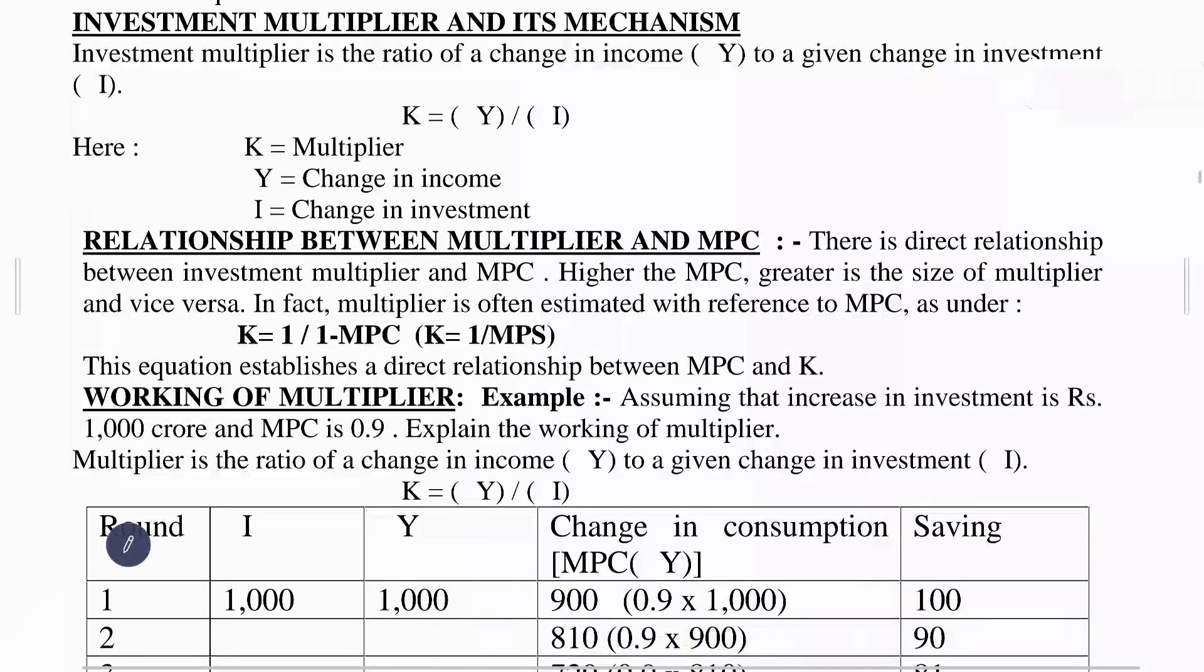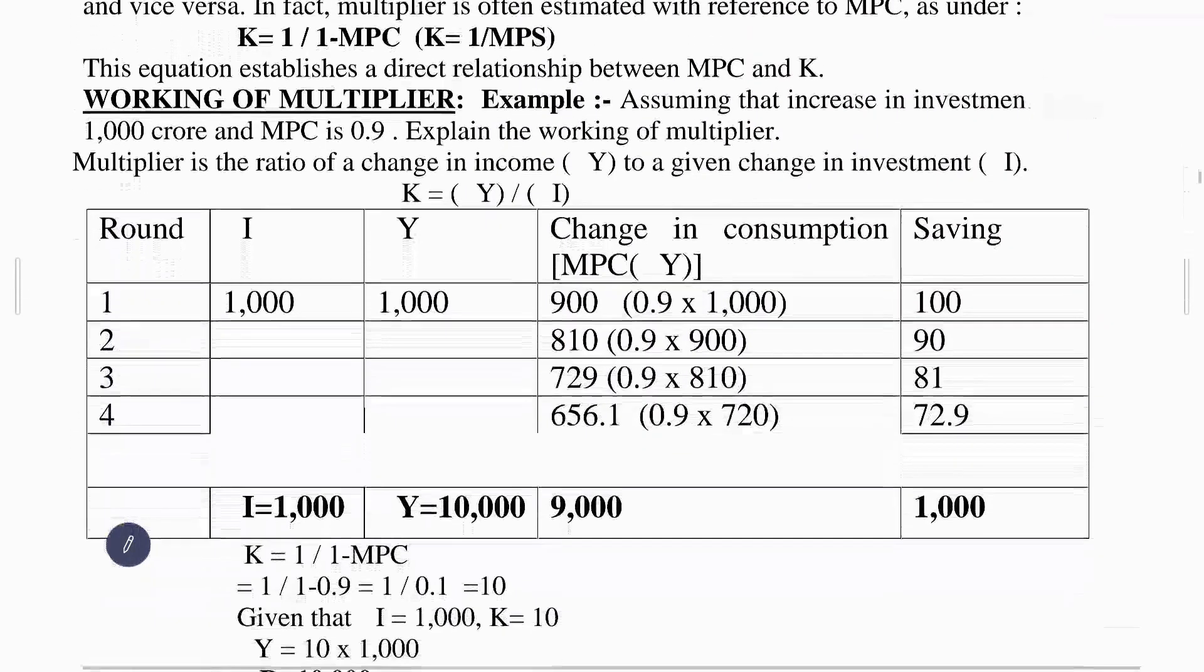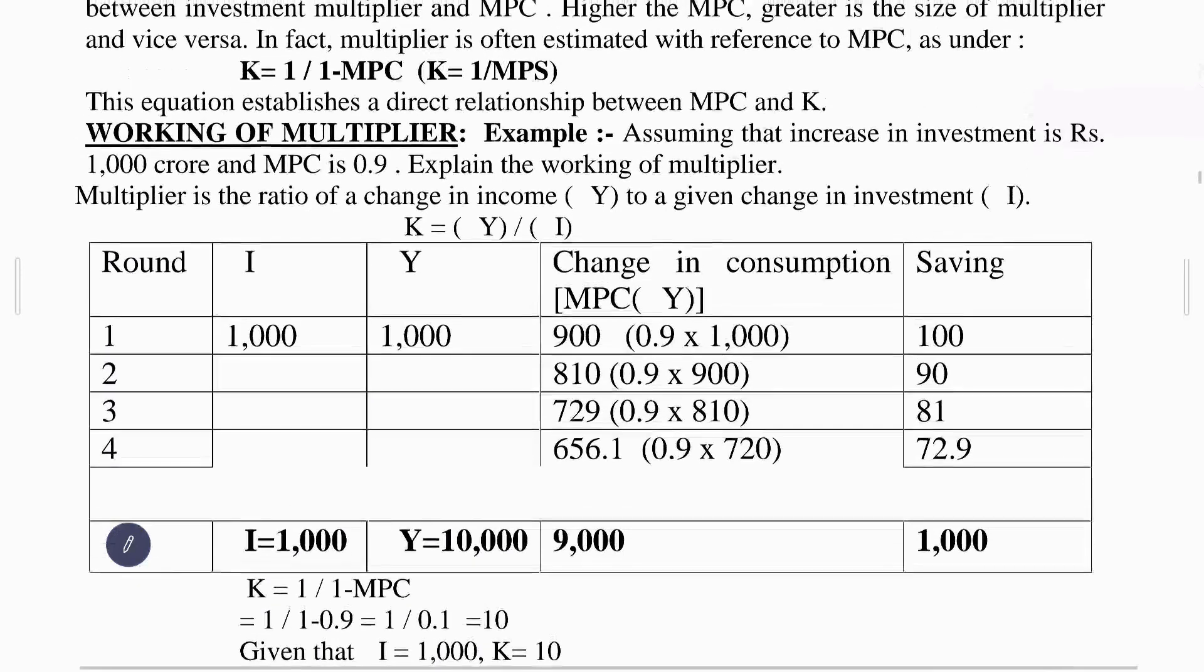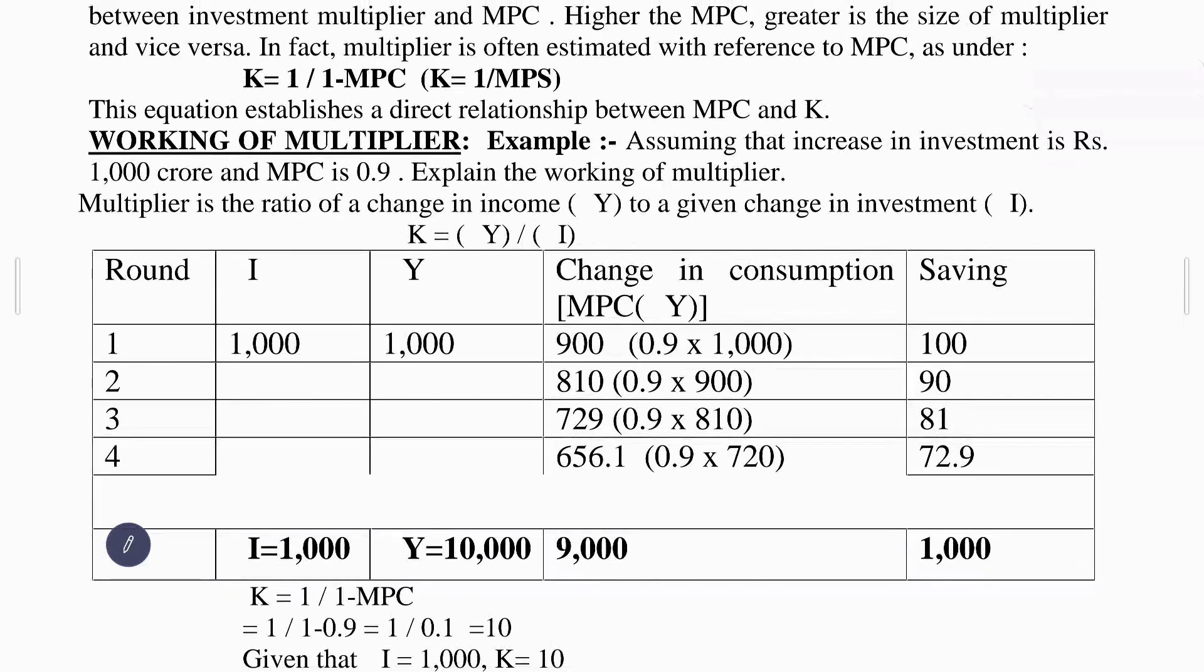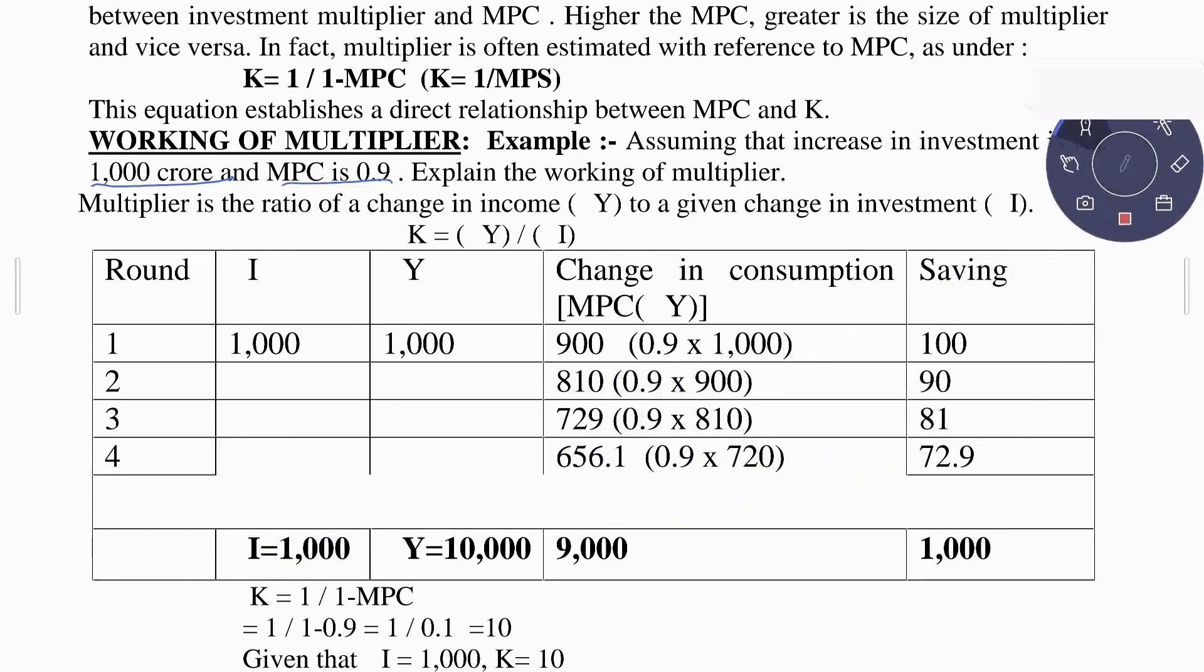Next, we will talk about the relationship of the multiplier. Assume that increase in investment is Rs. 1,000 crore. We have stated that the MPC is 0.9. Now, we will explain how the multiplier works.